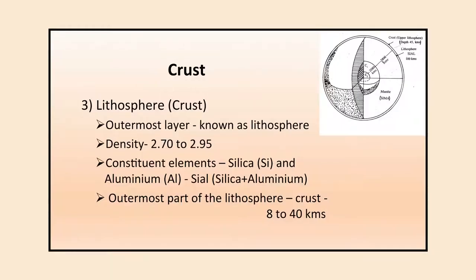The third layer is the crust, or the outermost layer, also known as the lithosphere. The density of this layer varies from 2.70 to 2.95. Its constituent elements are silica and aluminum, so it is also called SiAl. It ranges between 8 to 40 kilometers in thickness. The outermost layer is called SiAl, also called crust and lithosphere.